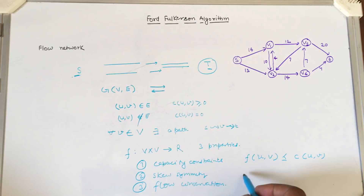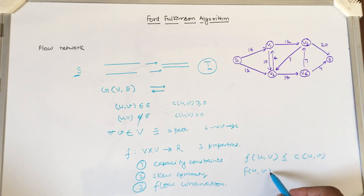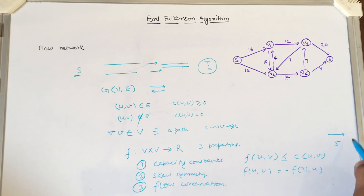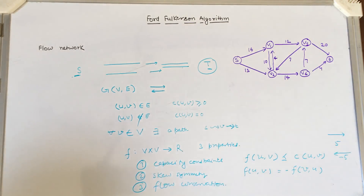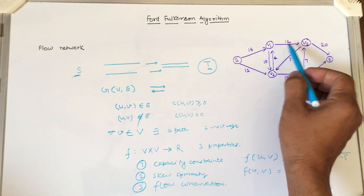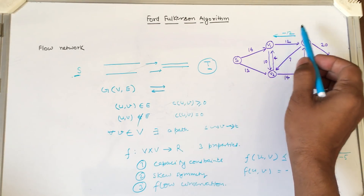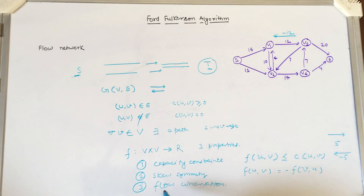The second property is skew symmetry. If you have a flow from U to V, we can equate that flow in the reverse direction V to U. So if the forward direction flow is 5, then minus 5 can be placed in the reverse direction. For example, if two vertices V1 and V2 have a forward flow of 12, then minus 12 is embedded in the reverse direction.